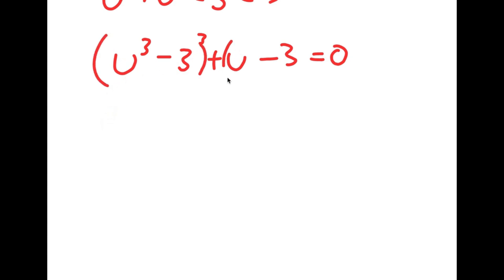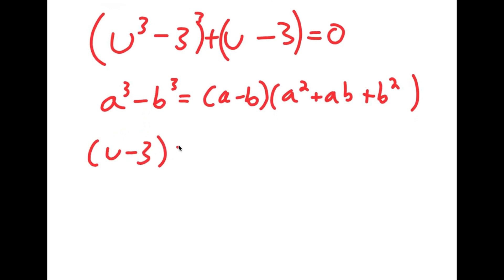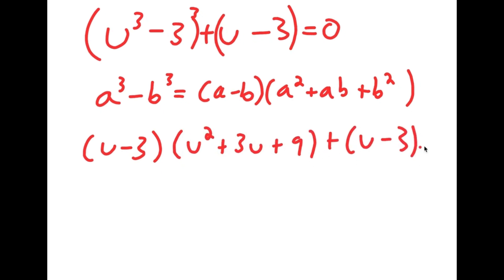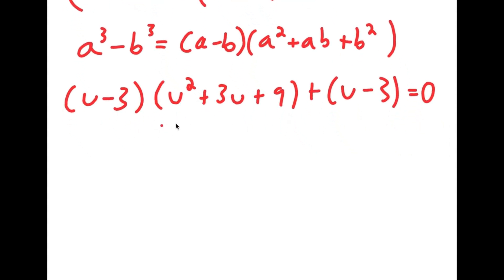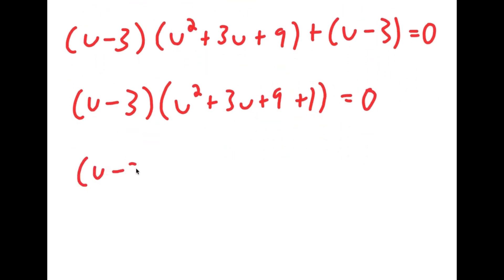If I have something in the form a to the power of 3 minus b to the power of 3, this equals a minus b times a squared plus ab plus b squared. So this turns into u minus 3 times u squared plus 3u plus 9, plus u minus 3, which equals 0. Because both terms have a common factor of u minus 3, I factor it out and get u minus 3 times u squared plus 3u plus 9 plus 1 equals 0. Since 9 plus 1 is 10, I get u minus 3 times u squared plus 3u plus 10 equals 0.